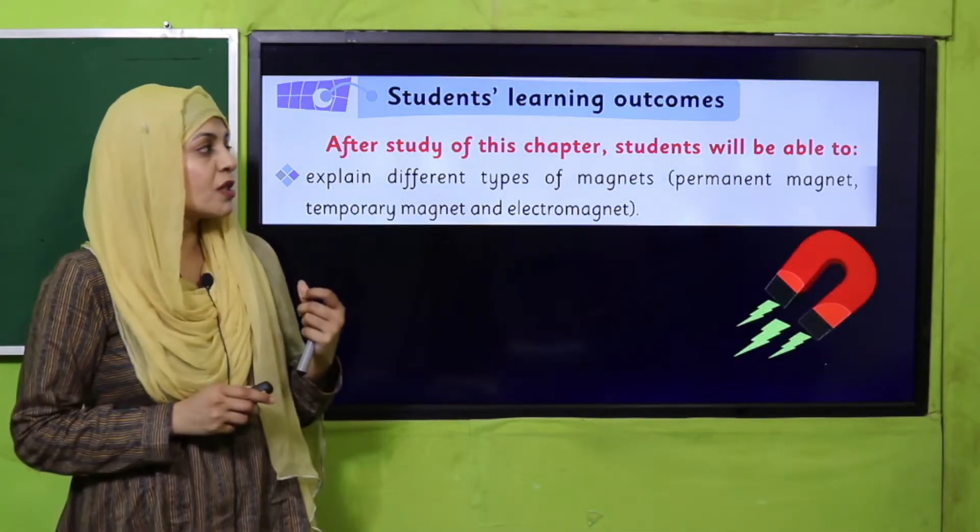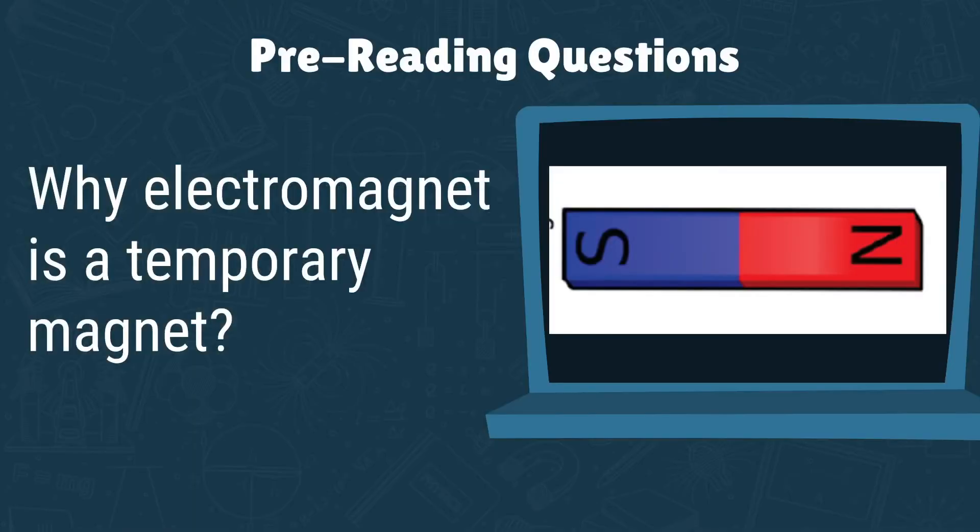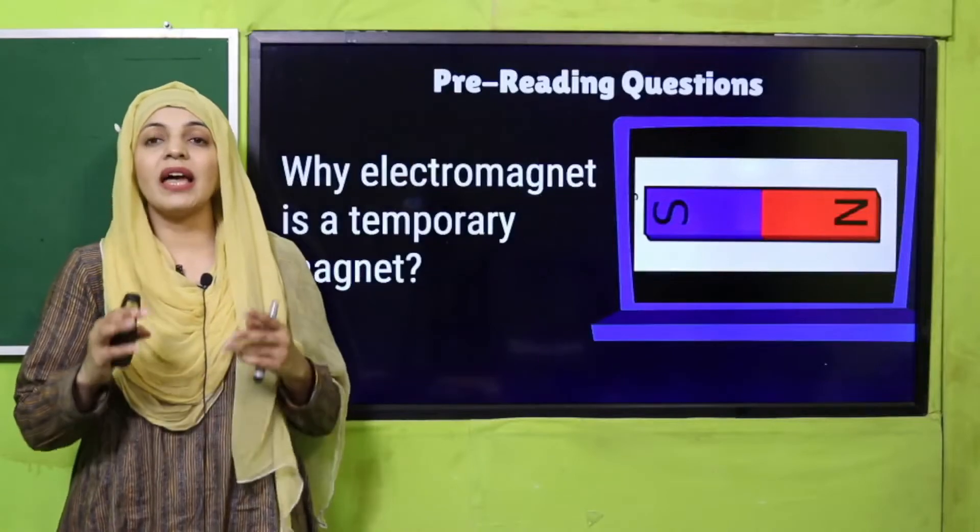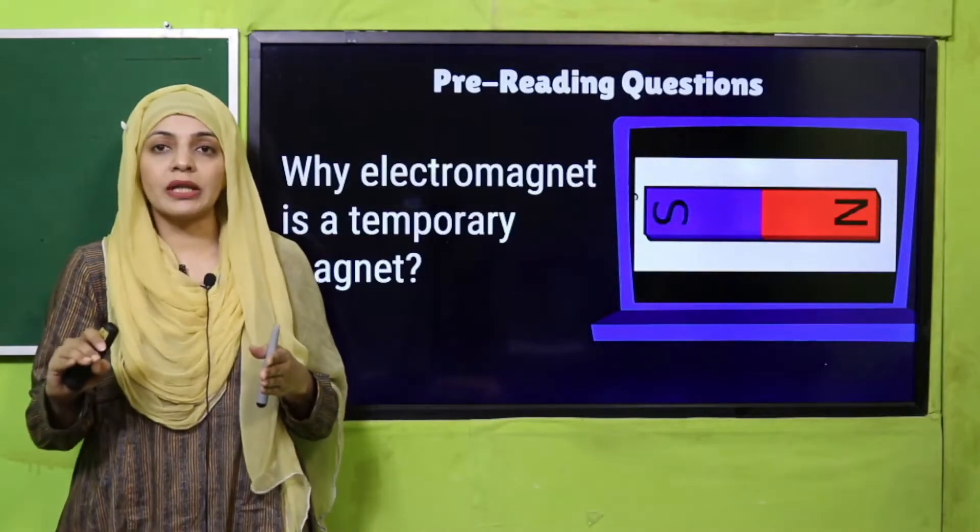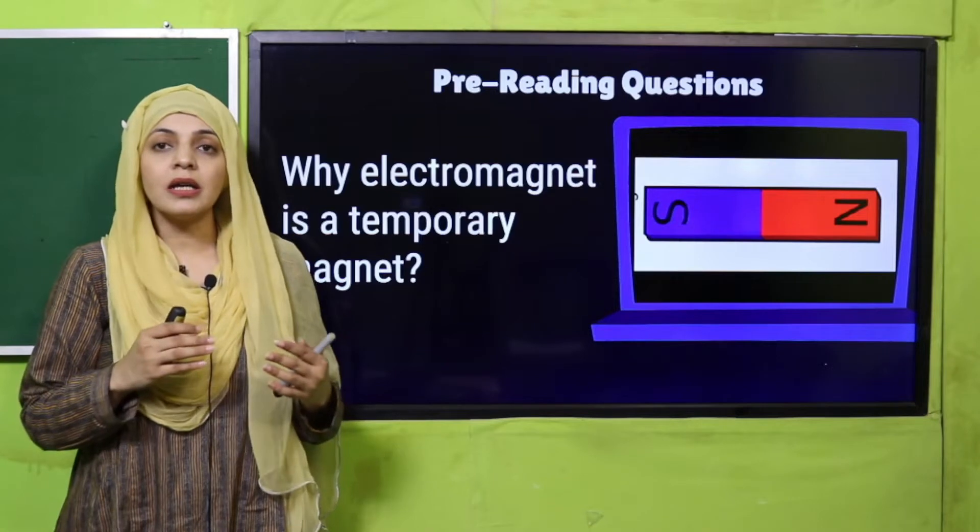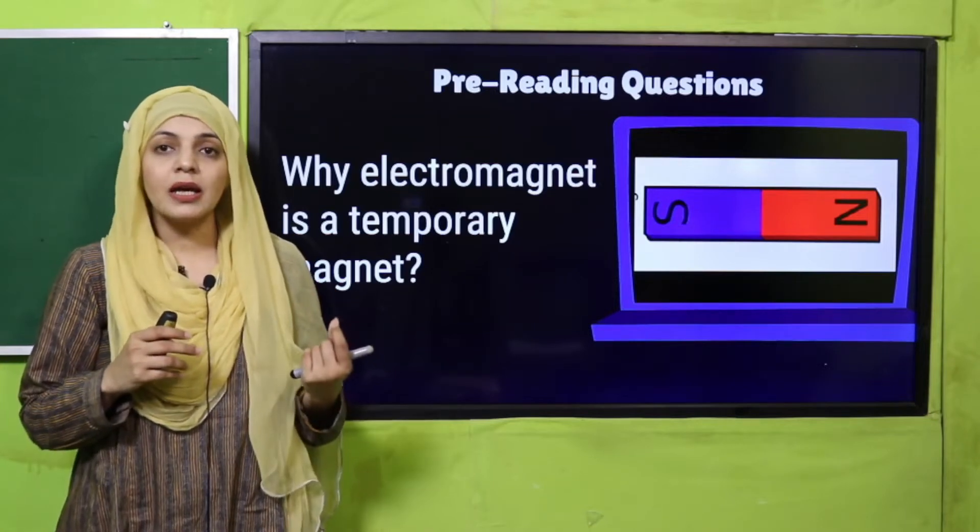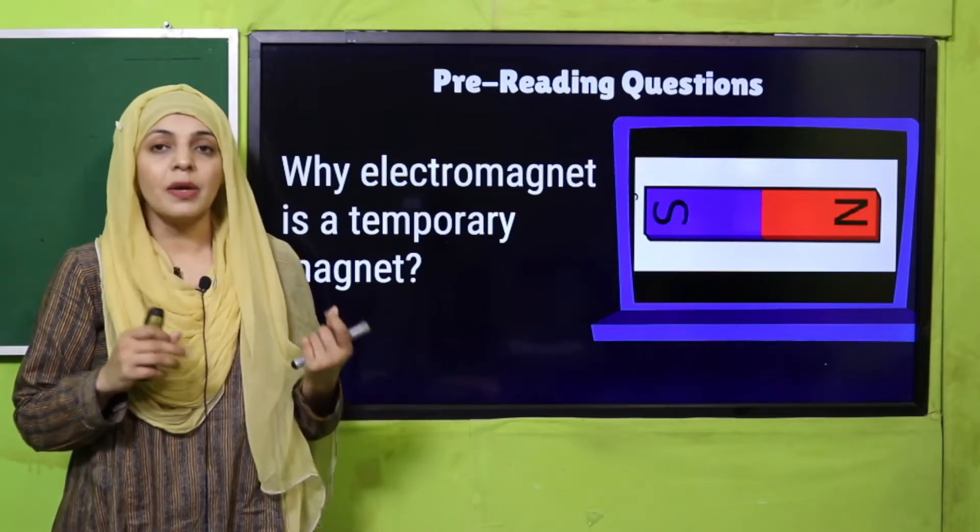Let's quickly move forward towards the pre-reading question. Quickly tell me: why is an electromagnet a temporary magnet? Because when the electricity is cut off,